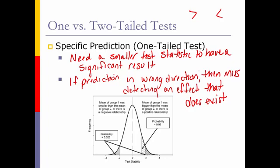So if we say that it's greater than, and the value is actually less than, we've missed that effect. So we've predicted it to be the wrong direction. So unless you have prior research that specifically says it should be greater than or less than, we should really just use a two-tailed test.